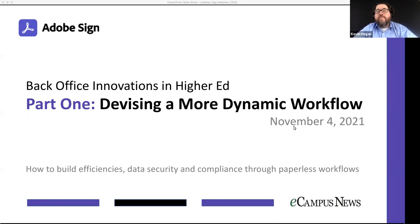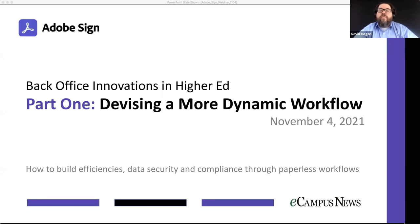Hello and welcome to this eCampus News webinar: how to build efficiencies and securities in higher ed through forms process automation. My name is Kevin Hogan, I'm the editor at large for eCampus. Today's event is brought to you by Adobe Sign. Adobe Sign helps schools go paperless, which revolutionizes the business of running an institution. Use Adobe Sign to create seamless workflows that are simple for staff and students to complete and can save your school both time and money.